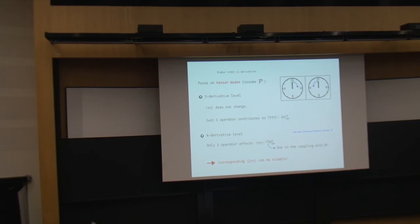Finally, at fourth order in derivatives, we found that after integration by parts and after field redefinitions, there is just one operator which can affect the tensor power spectrum. This operator is due to the coupling with the inflaton, and so it corresponds to a zeta-gamma-gamma three-point function, which could be, in principle, sizable because it is not slow-roll suppressed. And, in principle, we could also see it.